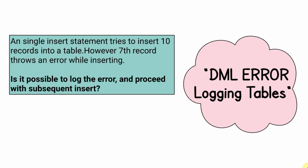Let us assume that we have a single insert statement which is trying to insert 10 records into a table. After inserting 6 records, while trying to insert the 7th record, suppose it throws an error — for example, the value is bigger than the data type of the target column. Oracle will throw an exception saying value too large for this column. When the exception occurs, Oracle will revert back all 6 previously inserted records.